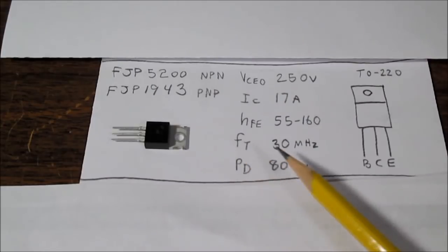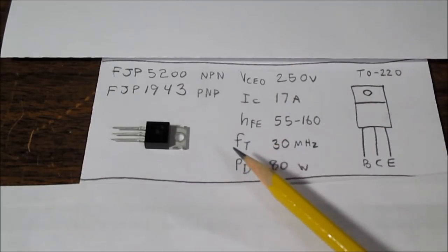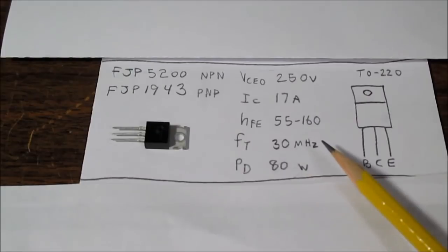Transition frequency is 30 megahertz. If you look at older transistors, which were used back in the 70s in output stages, you'll see 1 megahertz, 2 or 3, sometimes 4, maybe 5 megahertz. But, you know, these are much faster transistors.